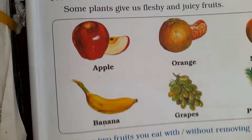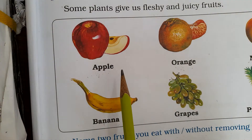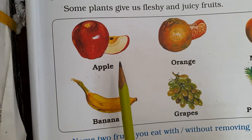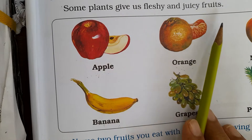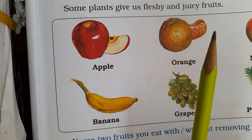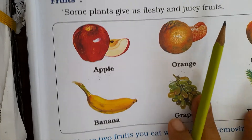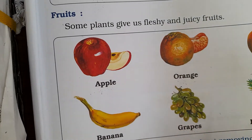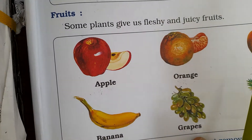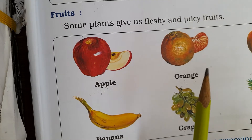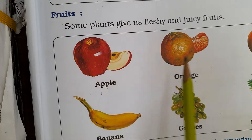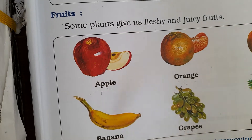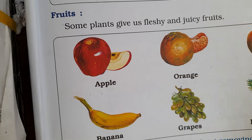Like some fruits — we get fleshy and juicy fruits from plants. We get apple, orange, mango, banana, grapes, and pineapple from plants.